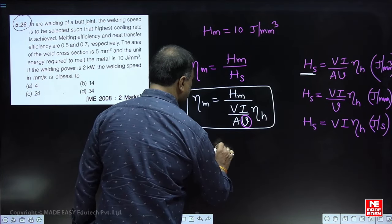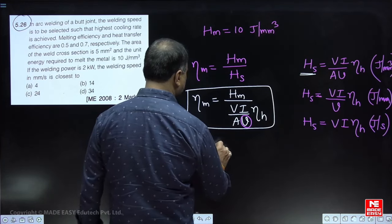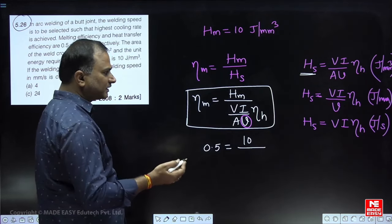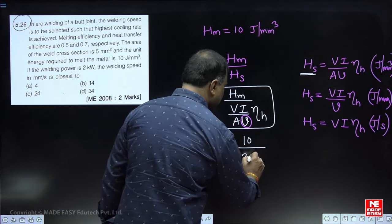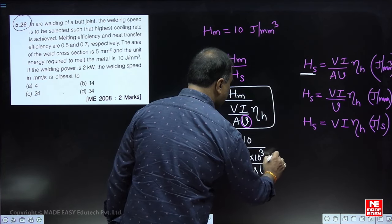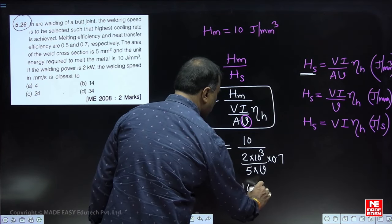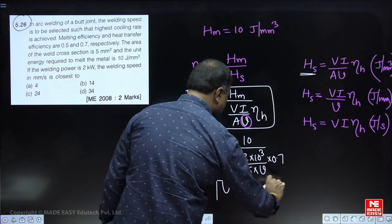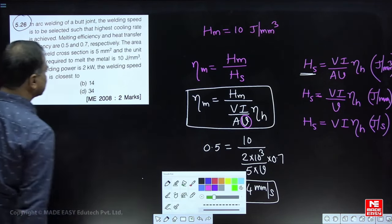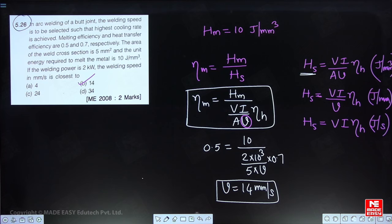Substituting all values and simplifying, the welding speed comes out to be 14 mm per second. This is the welding speed obtained using this formula. This particular formula is asked many times in GATE examinations — sometimes asking voltage, current, area, or melting efficiency. Always check the units for balancing. Option B is correct for this problem.